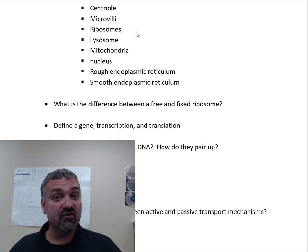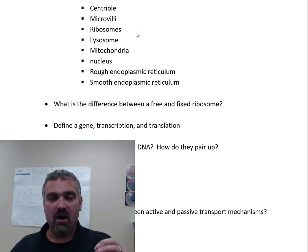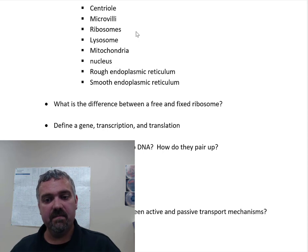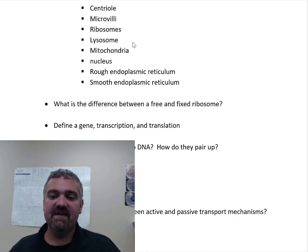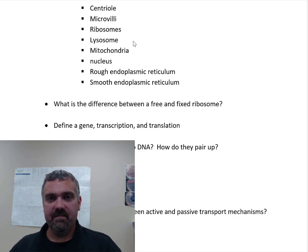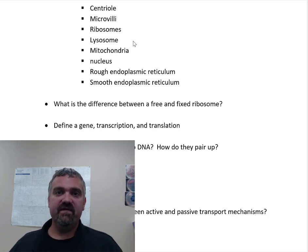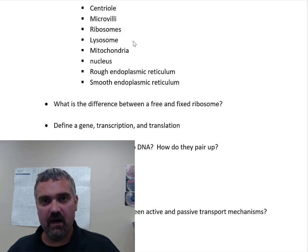Ribosomes are the site of translation or protein synthesis — the location where RNA becomes chains of amino acids, becomes proteins. There are different types of ribosomes. The lysosome I consider the digestive system of the cell — it's a bag of acid and enzymes that can break down damaged organelles, recycle proteins, break down food stuff, and kill bacteria.